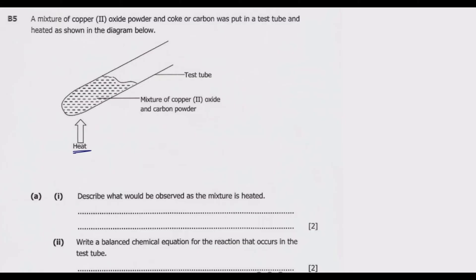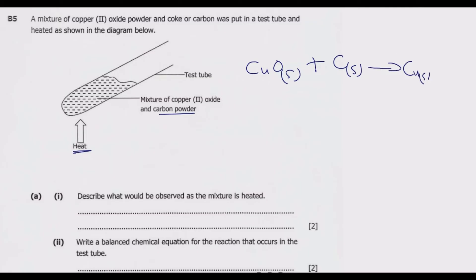As the mixture is being heated, the copper 2 oxide, which is solid, is going to react with the carbon, which is also solid in powder form. The powder form helps increase the surface area. Because carbon is more reactive than copper, it is going to displace copper in the oxide, resulting in a single displacement reaction. We remain with copper solid plus carbon monoxide gas.